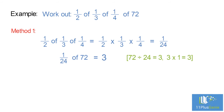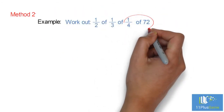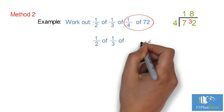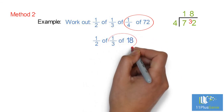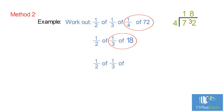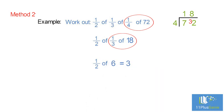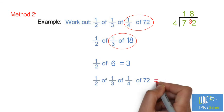A half of a third of a quarter of 72 equals 3. Method two: first work out a quarter of 72 — 72 divided by 4 equals 18. Then work out one-third of 18 — 18 divided by 3 equals 6. And lastly, work out a half of 6, which equals 3. A half of a third of a quarter of 72 equals 3.